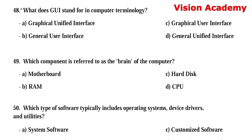Question 48: What does GUI stand for in computer terminology? Option A: graphical unified interface. Option B: general user interface. Option C: graphical user interface. Option D: general unified interface. The right answer is Option C, graphical user interface.